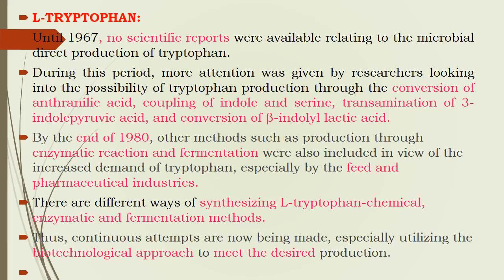Regarding the production of L-tryptophan, in 1967 there were no scientific reports of tryptophan being produced. They underwent some combinations of reactions or conversions — using conversion of anthranilic acid, coupling of indole and serine, transamination of 3-indole pyruvic acid, or conversion of beta-indole lactic acid. These were the basic chemical methods initially used for tryptophan production.